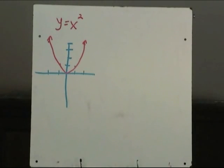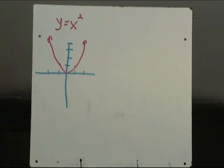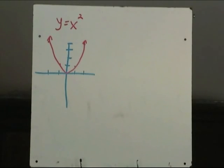Here's a function you've seen many times before. It's the parabola y equals x squared and I've sketched a picture of it there. What we're going to look at in this learning guide is some transformations. We're going to be moving this parabola left and right, up and down. We're going to do a bunch of stretches and some reflections of the graph.